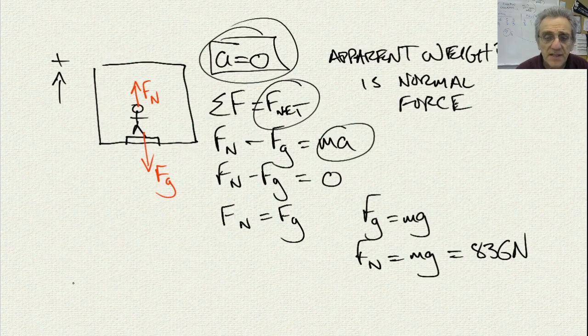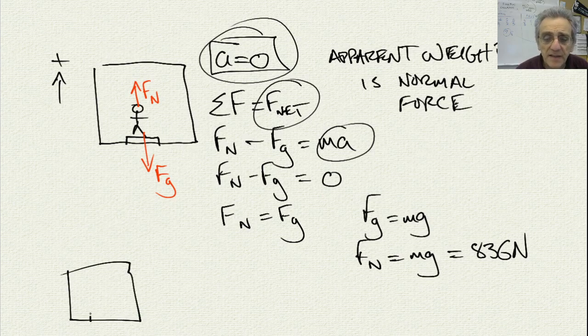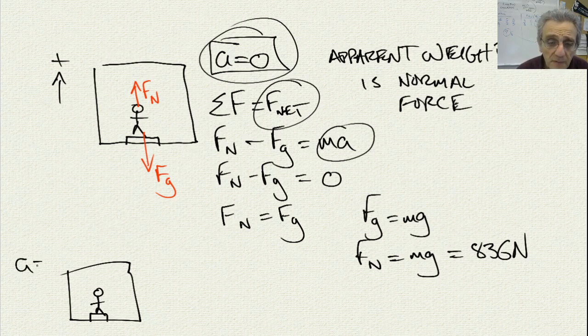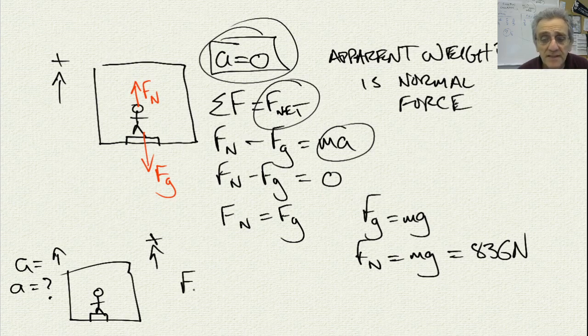Then, the question says, now, if the elevator is accelerating up, acceleration is up, and we don't know what it is, but we know that it's accelerating up. And again, positive is up. But it's accelerating up because you've pressed the button to a higher floor, and so the elevator starts to move up. But it has to accelerate up from rest. And when it does, the person looks down at the scale, and the scale now reads where the normal force is equal to 936 Newtons.